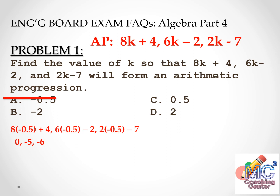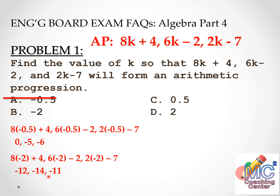Eliminate letter A since it cannot form an arithmetic progression. Let's try letter B, where k is negative 2. We get 8 times negative 2 plus 4, 6 times negative 2 minus 2, and 2 times negative 2 minus 7, which gives negative 12, negative 14, and negative 11. The difference between the first and second term is negative 2, but the difference between the second and third term is negative 3. Since the differences are not equal, eliminate letter B as well.